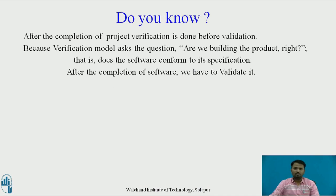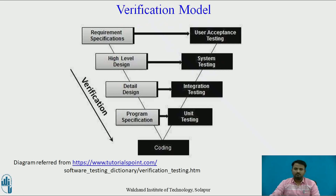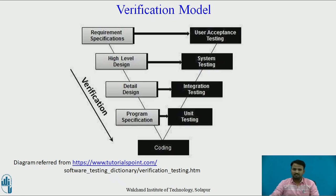After the completion of a project, Verification is done before Validation, because the Verification Model asks the question: are we building the product right? That is, does the software confirm to its specification. After the completion of software, we have to validate it. We can see the Verification Model diagram: requirements specification, high level design, detail design and program specification, and then coding is done.